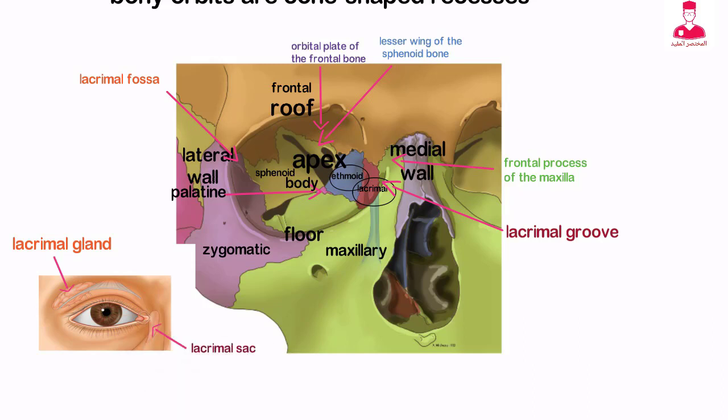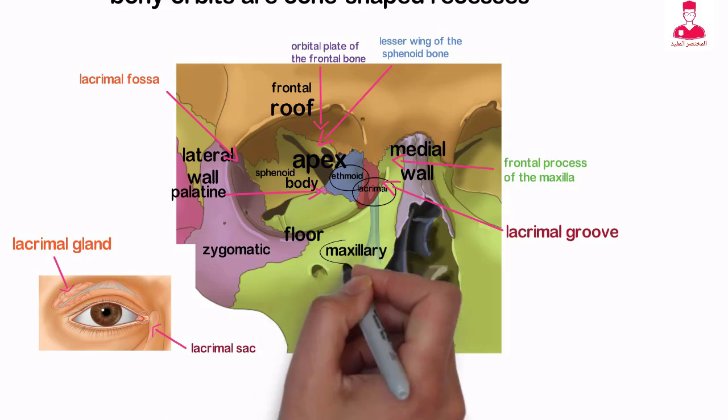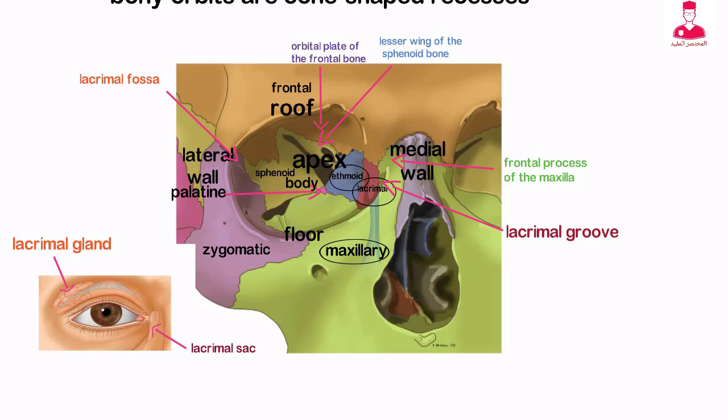The floor of the orbit, which is also the roof of the maxillary sinus, is made up of the maxilla, zygoma, and palatine bones.